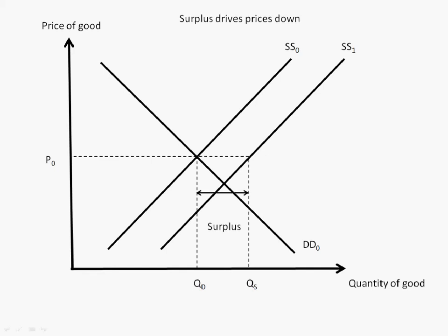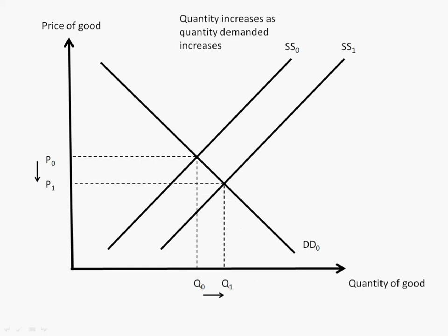There will be a downward pressure which will cause QD to increase and QS to decrease. As a result, there will be a decrease in equilibrium price from P0 to P1 and an increase in equilibrium quantity from Q0 to Q1.